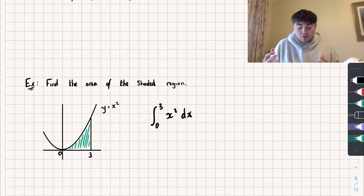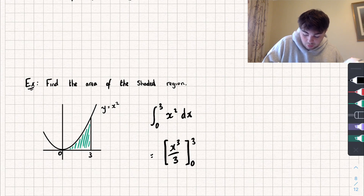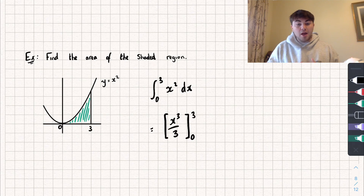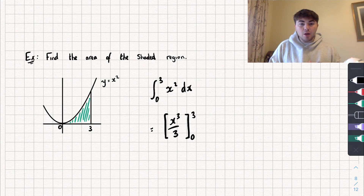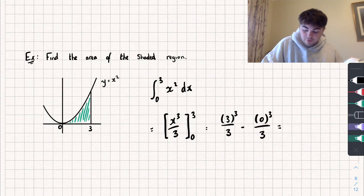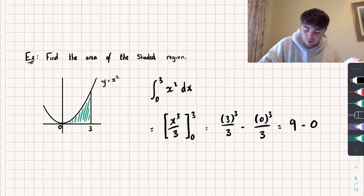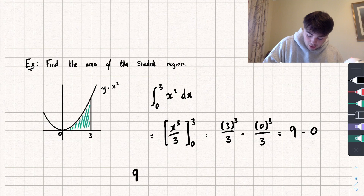Now we calculate this definite integral by adding 1 to the power and dividing by the new power, so we get x cubed divided by 3 between the limits of 0 and 3. We substitute in the upper limit and then subtract what happens when we substitute in the lower limit. So we get 3 cubed divided by 3, subtract 0 cubed divided by 3. 3 cubed is 27, and 27 divided by 3 is 9, and 0 cubed divided by 3 is 0. So we get an area of 9 units squared.